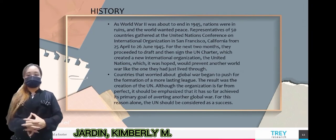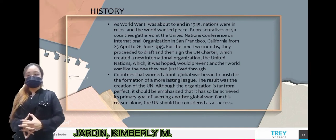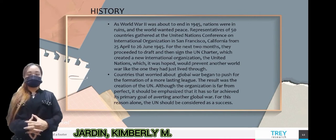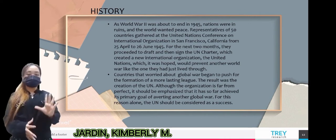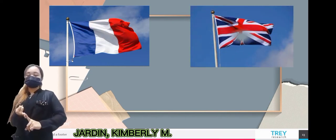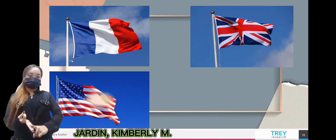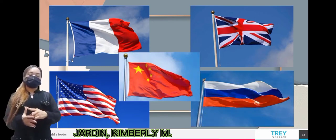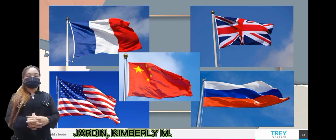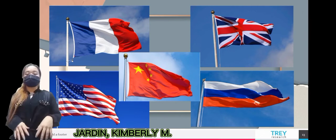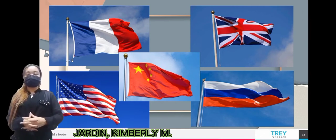Nowadays, the United Nations consists of 193 countries. It is managed by the UN Security Council, which is made up of five countries: France, Britain, the United States, Russia, and China. The United Nations also has specialist agencies like the World Health Organization and UNICEF, which help to improve the lives of children.